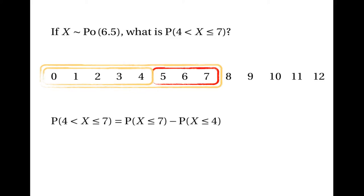So the probability that x is 5, 6 or 7, the probability that x is greater than 4 and less than or equal to 7, is the probability that x is less than or equal to 7 take away the probability that x is less than or equal to 4. This step is essential because these are the only sorts of probability we can look up in the tables.